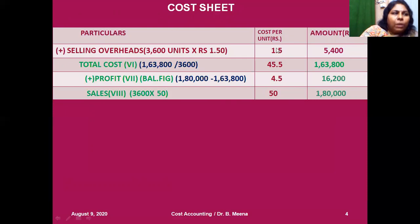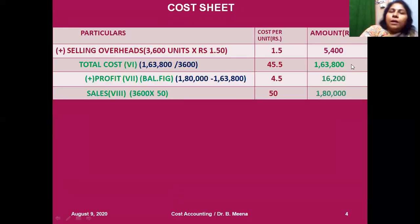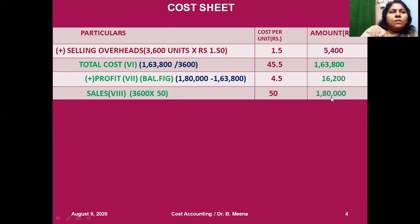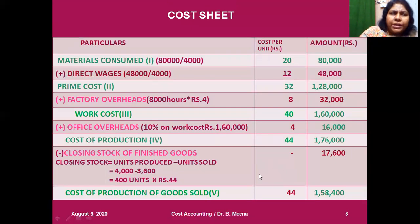Total cost per unit = 44 + 1.5 = ₹45.5; total cost = 1,58,400 + 5,400 = ₹1,63,800. Sales = 3,600 units × ₹50 = ₹1,80,000. Since sales exceed total cost, there is a profit. Profit = 1,80,000 − 1,63,800 = ₹16,200. Profit per unit = 50 − 45.5 = ₹4.5, or 16,200 divided by 3,600.